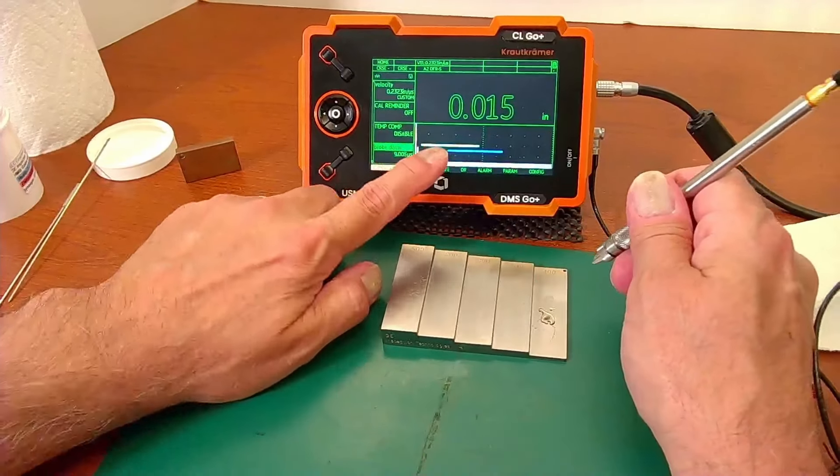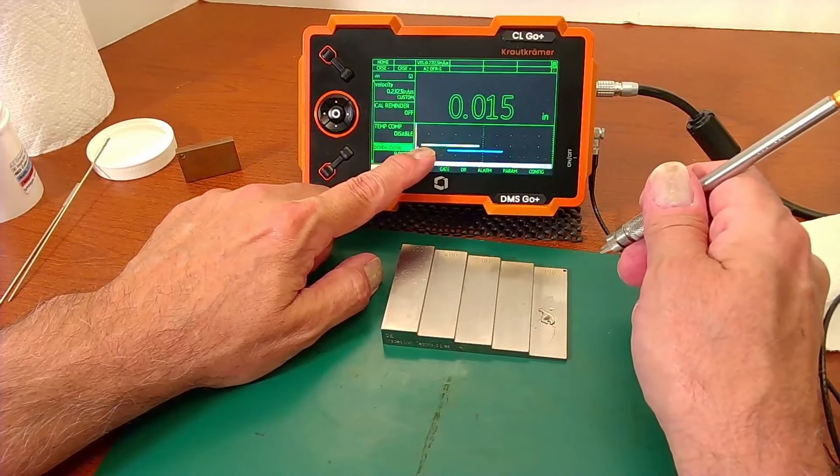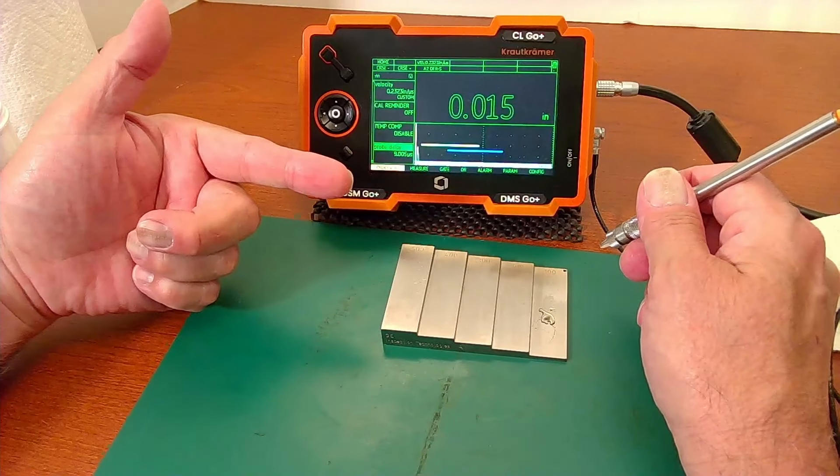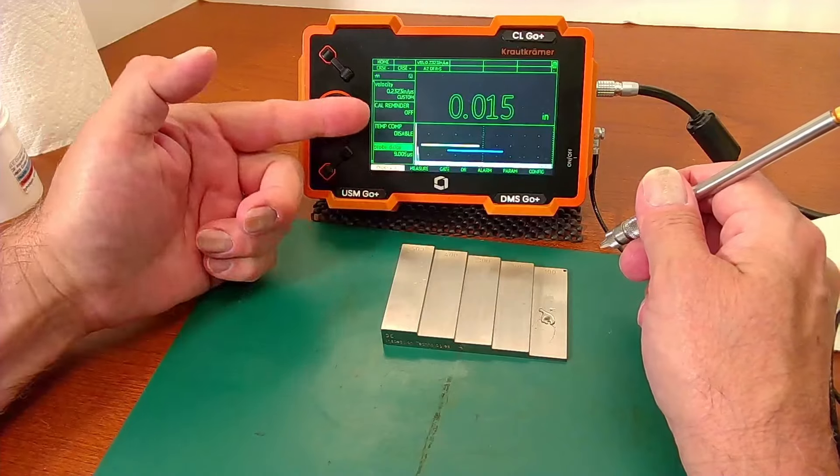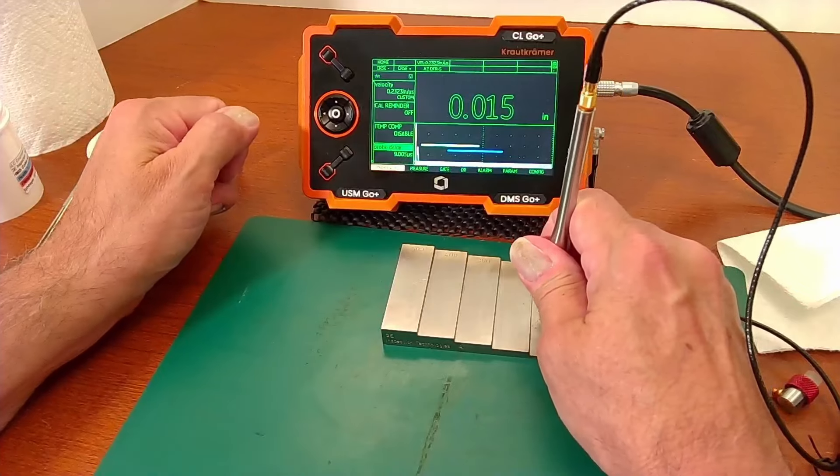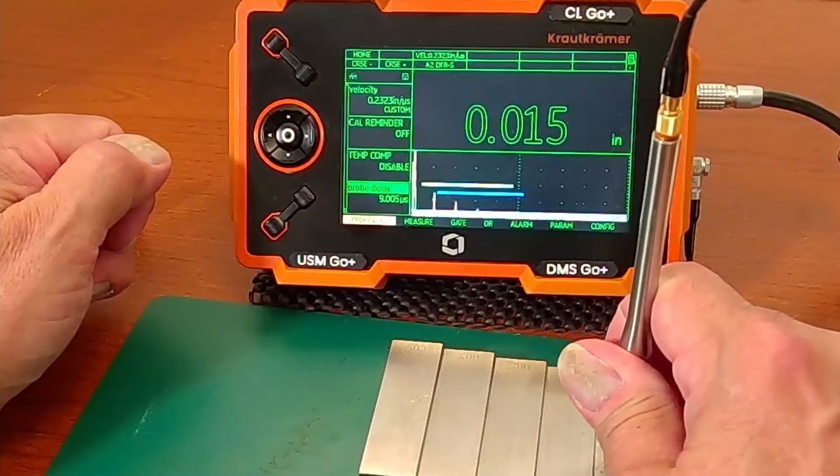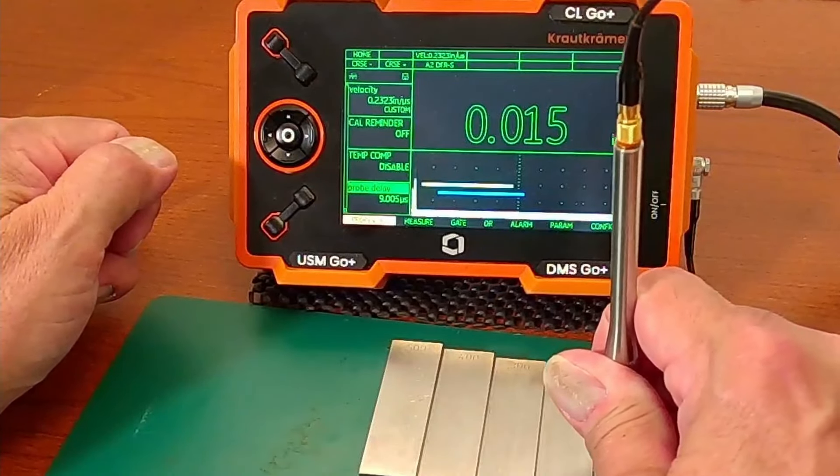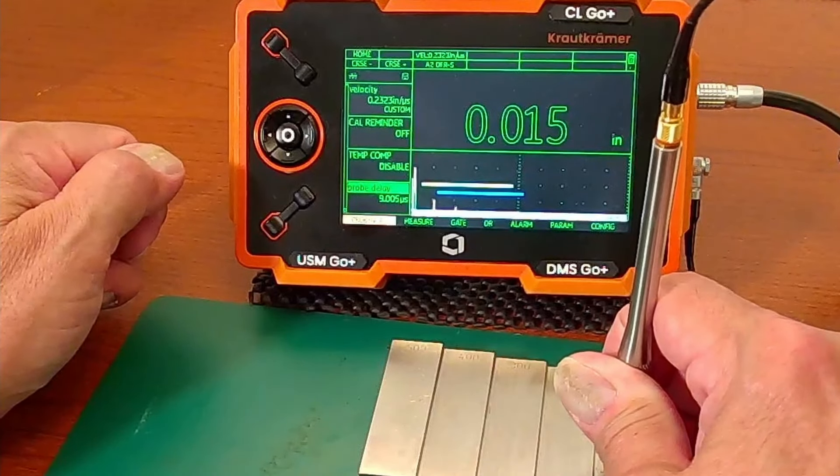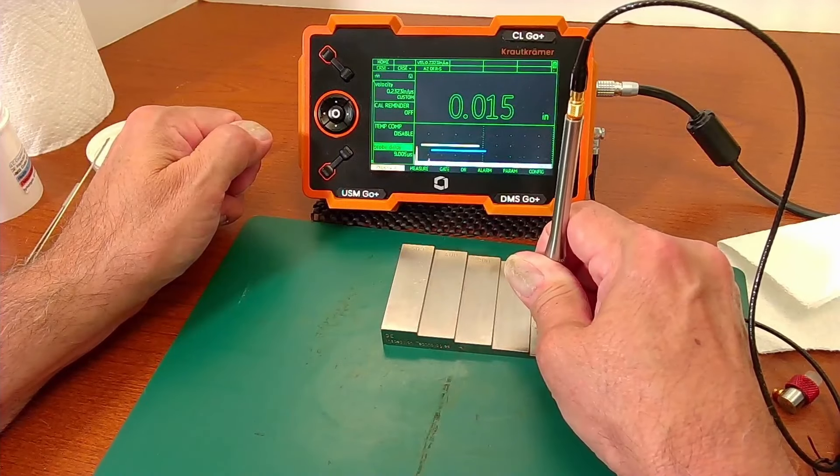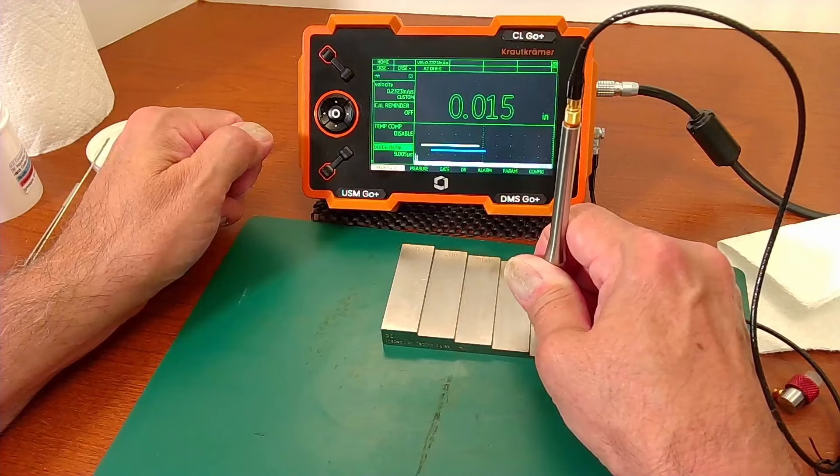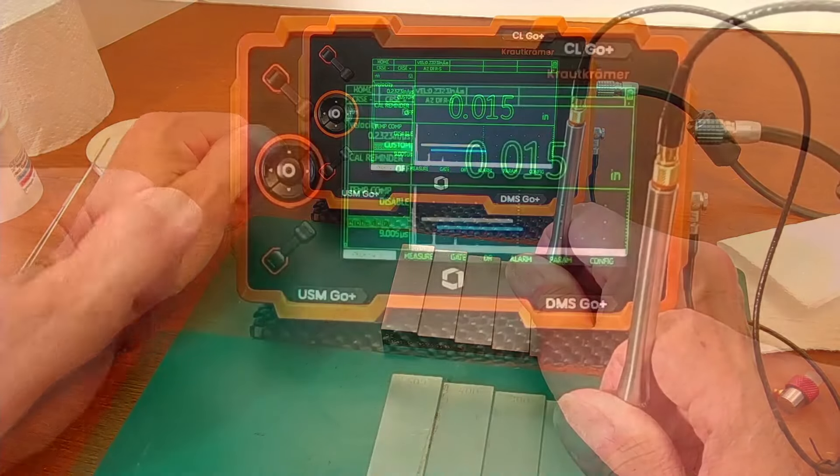One of the real advantages to using the DMS Go is you have a pretty rapid update rate. You're typically firing 16 shots per second in the DMS Go, and you have a nice live color A-scan. When I put the probe down, I can see if I'm presenting the probe nice and square to the part. I can peak up the echoes and I can tell whether I'm set up or not. You notice that even when I get perfectly square and my signal is peaked up, I still don't have quite enough amplitude to trigger the gates.